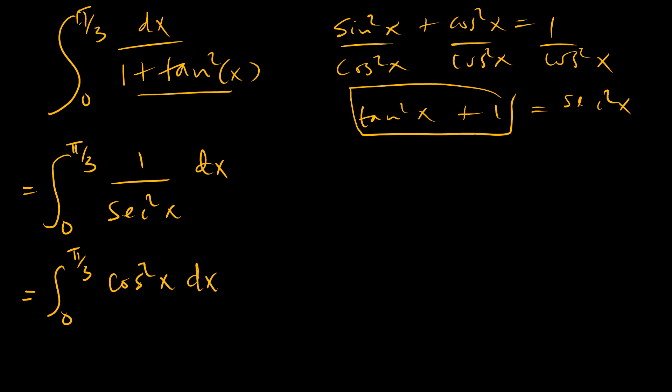We also know that cosine 2x is equal to cosine squared x minus sine squared x, which is the same as 2 cosine squared x minus 1.